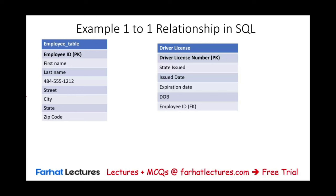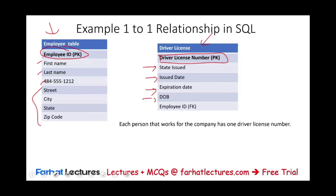Let's look at an example to illustrate one-to-one relationship. We have an employee table with employee ID as the primary key, along with first name, last name, telephone number, and address. Each employee also has a driver's license issued by the state, with an issue date, expiration date, and date of birth. The driver's license table has a driver's license number as the primary key. Each employee should have only one driver's license, and each driver's license belongs to only one employee — you cannot have a license from multiple states. This is a one-to-one relationship.